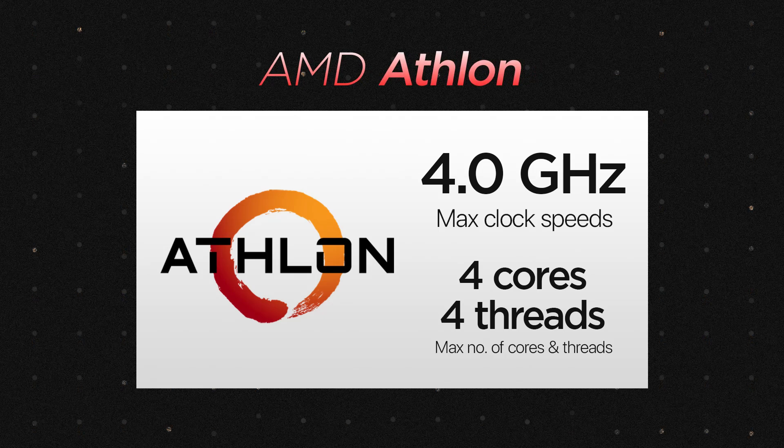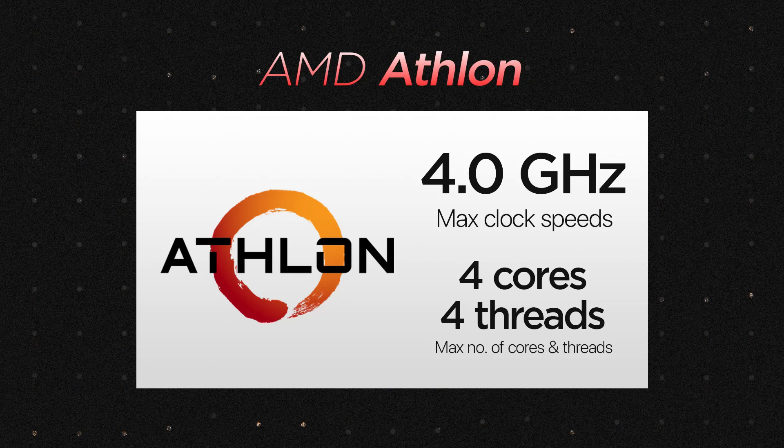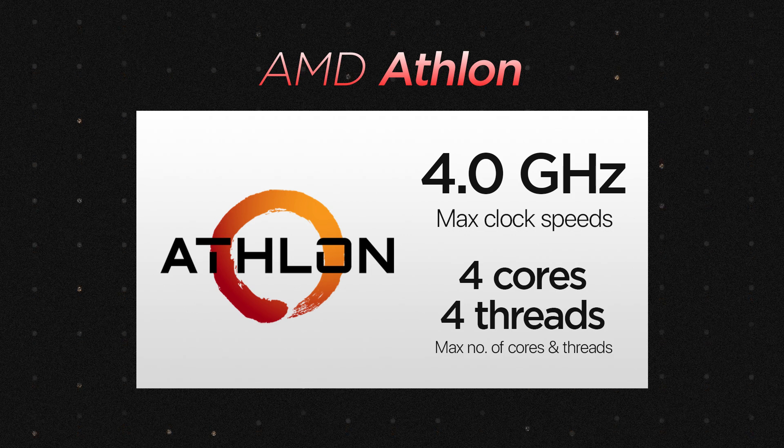Then we have the Athlon series, which is designed for budget-conscious users who still need solid performance. These processors typically have 4 cores and 4 threads and offer good value for basic tasks such as web browsing, email, and office productivity. Nowadays you can find 7000 series Athlon processors on budget laptops. However, if you're looking to get an Athlon processor for a low-budget desktop build, you're largely stuck with the Athlon 3000G, which was released back in 2019.